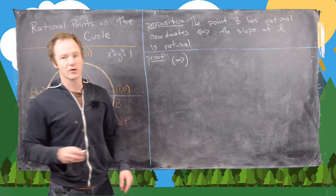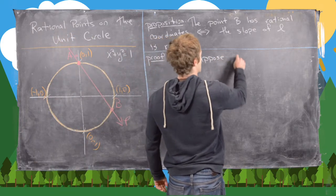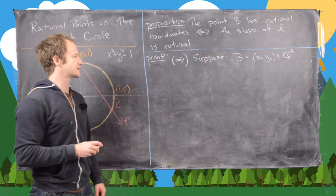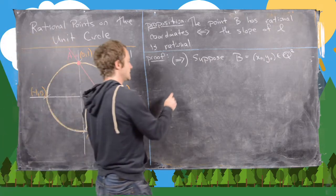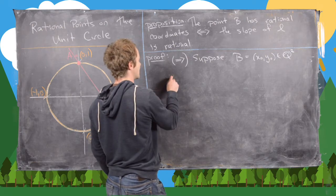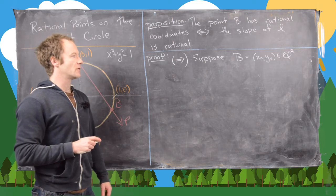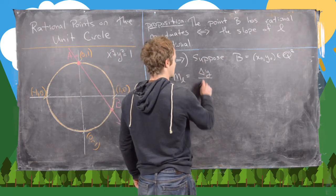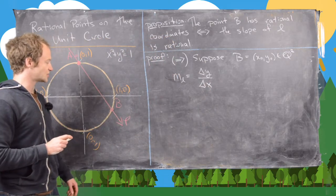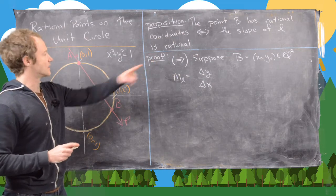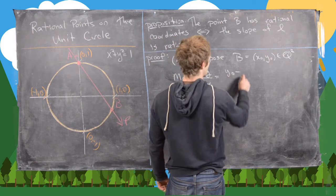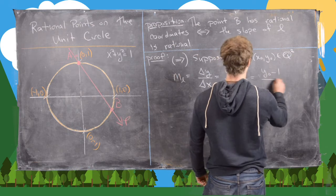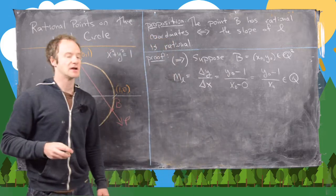Let's do the easy direction first. Suppose B = (x₀, y₀) with both coordinates rational, so B is in Q². We can use the slope formula to find the slope of L: M_L equals the change in y over the change in x, which is y₀ minus 1 over x₀ minus 0 — that is, (y₀ − 1) / x₀. That's clearly rational, since rational numbers combine under arithmetic to give rational numbers.